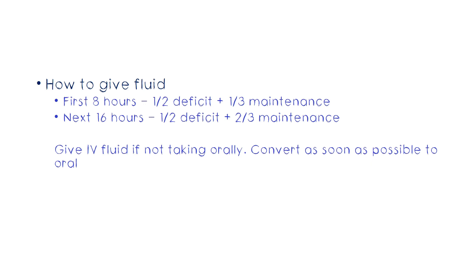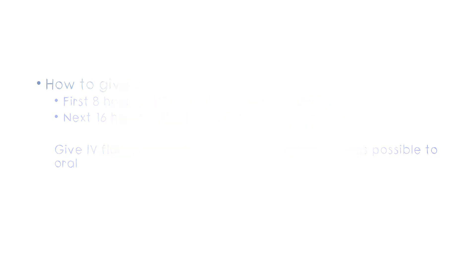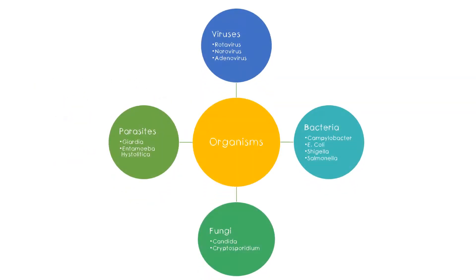The organisms involved in acute gastroenteritis could be viruses, bacteria, fungi, or parasites. The most common viruses are rotavirus, norovirus, and adenovirus — which is why we specifically ask if the rotavirus vaccine has been given. Bacterial pathogens include Campylobacter, E. coli, Shigella, and Salmonella. Fungi could be Candida and Cryptosporidium, and parasites include Giardia and Entamoeba histolytica, though those are less common.